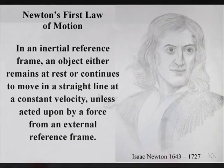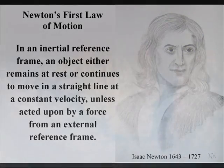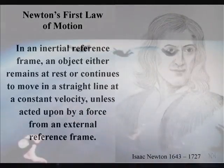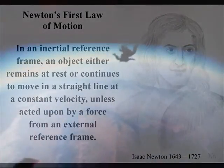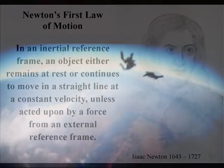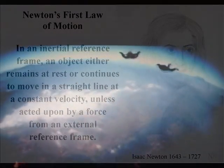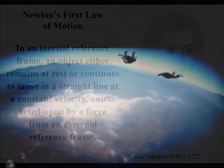On the other hand, say there is a large planet nearby. As an object gets closer, there is a difference in gravitational potential energy, and the symmetry is broken, so there is no translational symmetry.